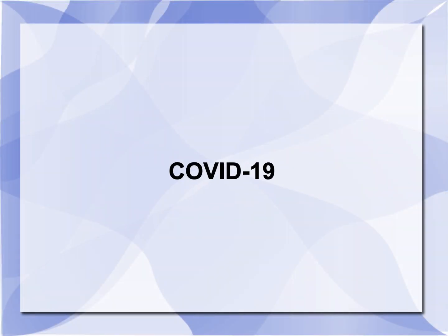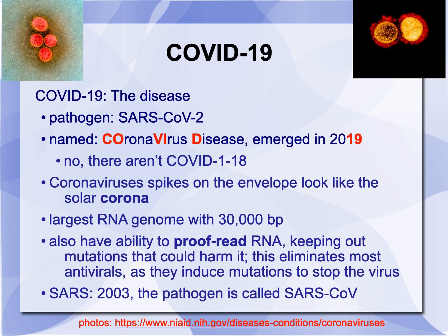That takes us to the pressing matter of COVID-19. COVID-19 is the disease; the pathogen has been named SARS-CoV-2, named coronavirus disease because it emerged in 2019. And no, unlike I've heard from White House spokespeople, there isn't a COVID-1 through 18. Coronavirus got their name because the spikes on their envelope look like the solar corona. It has the largest RNA genome with about 30,000 base pairs — roughly three times hepatitis B and about ten times the flu.